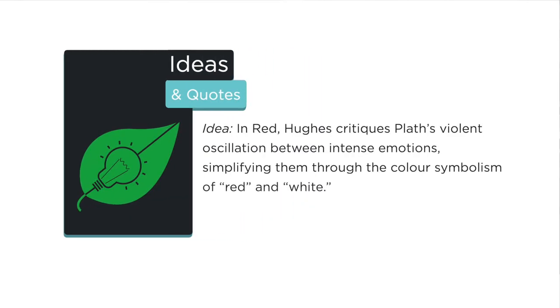This is where we see the dissonance really start to build, because of the context, purpose, and audience we discussed. Hughes is writing for a very different purpose and a very different audience. The key idea we're unpacking in Red is that Hughes critiques Plath's violent oscillation between intense emotions and simplifies them through the colours of red, white, and blue. He's really trying to say: there isn't this complexity — it literally is just a dramatic binary. It's red, it's white.